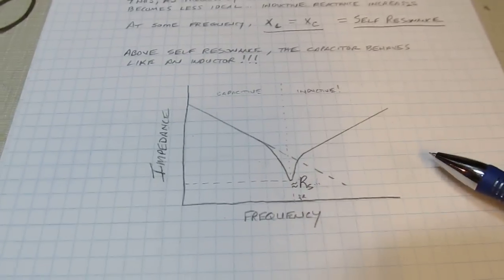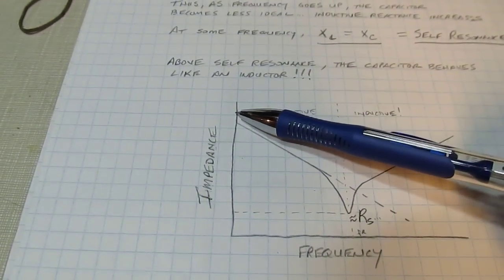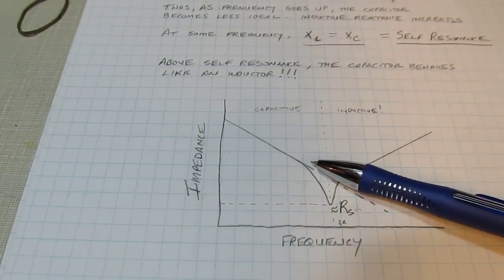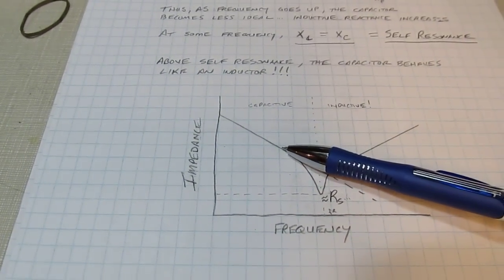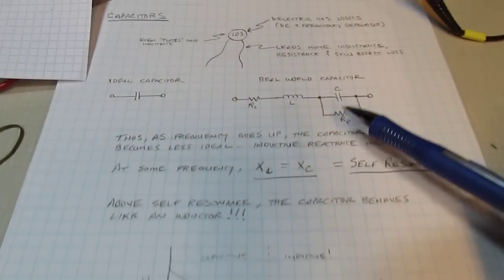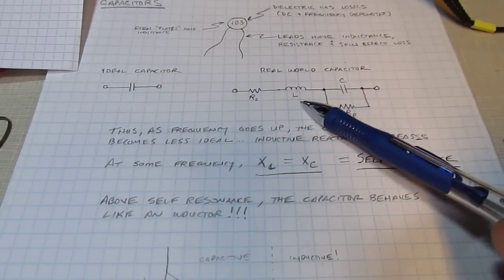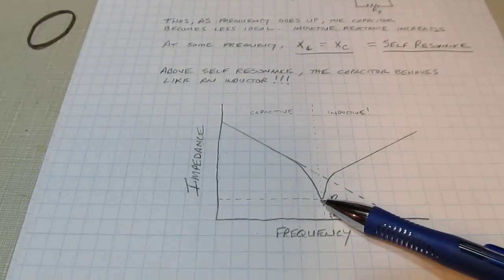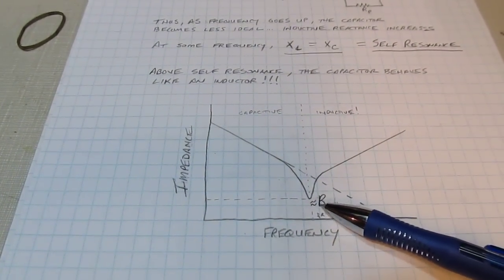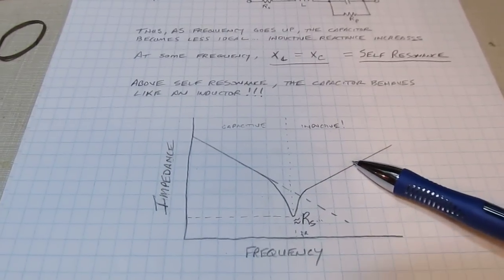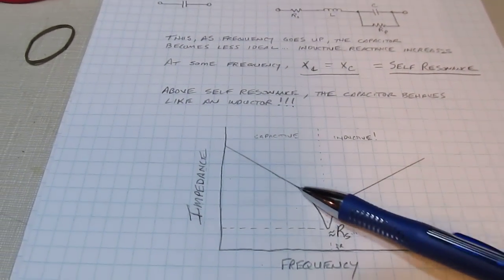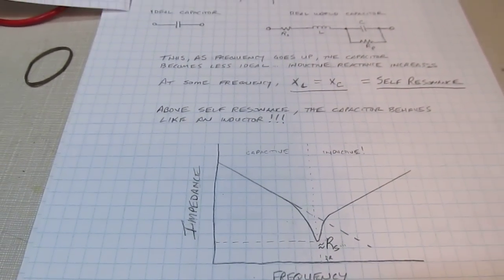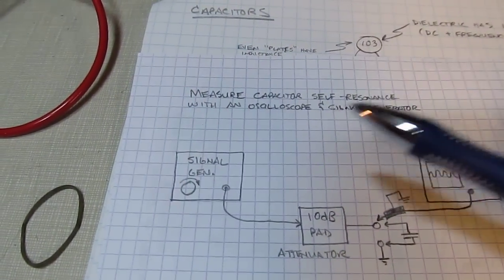For a capacitor at low frequencies, below the self-resonant frequency, it looks like a capacitor — the impedance drops as frequency goes up. But when you reach the point where the capacitive and inductive reactances are equal, you get a dip in the response, and then above that frequency the impedance goes back up again and it looks inductive.